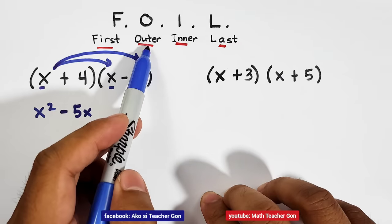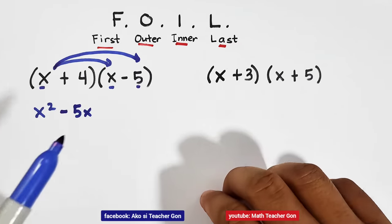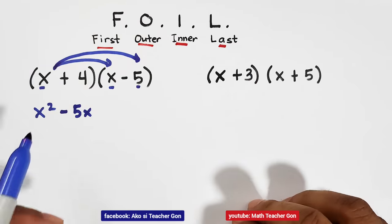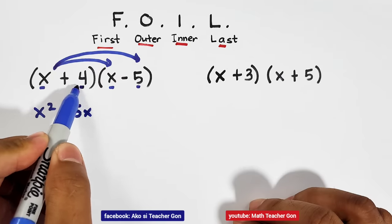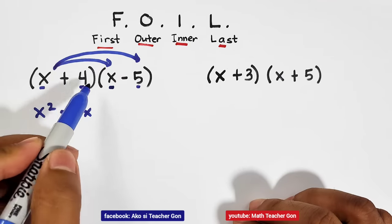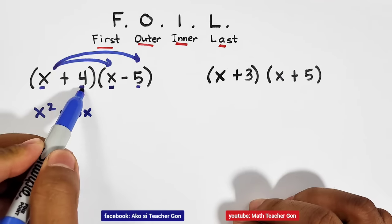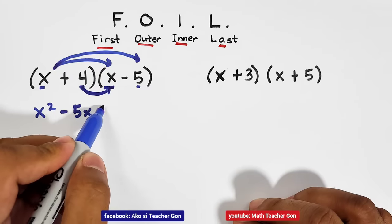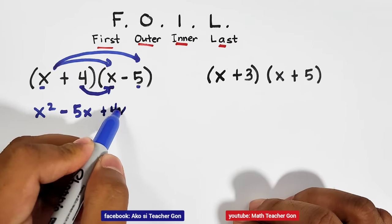After the outer terms, let's talk about the inner terms. Inner terms are the terms inside the parentheses, and these are 4 and x. So let us multiply 4 and x. 4 times x, so that would be plus 4x.